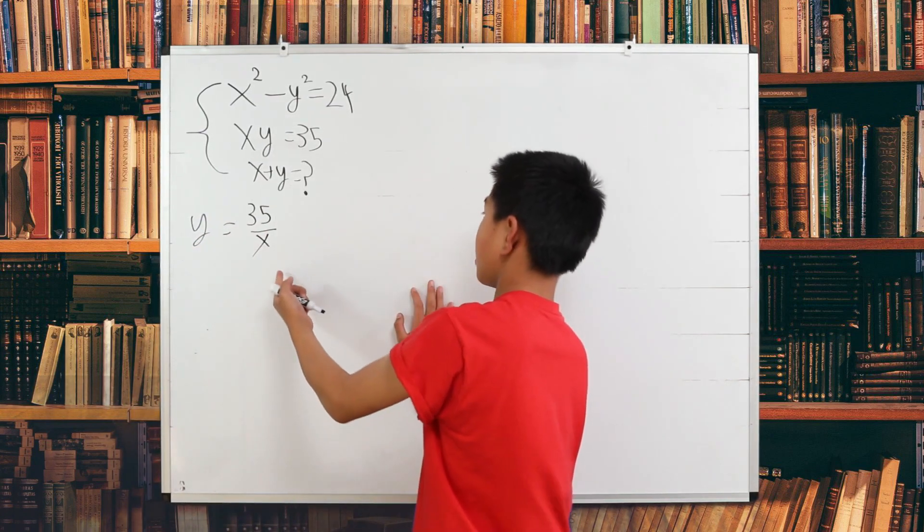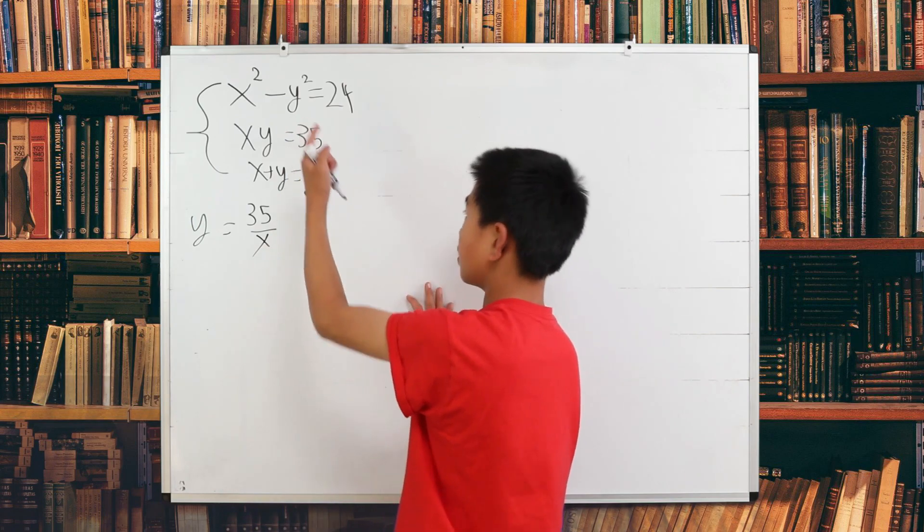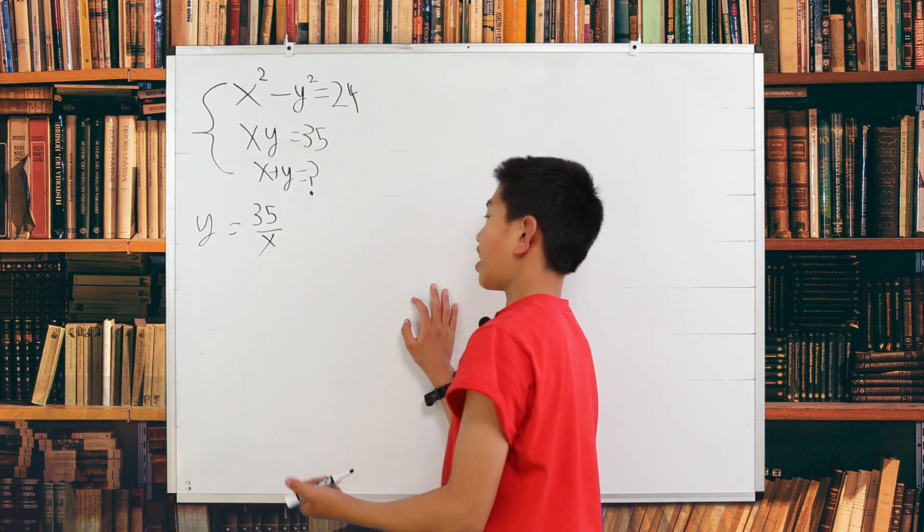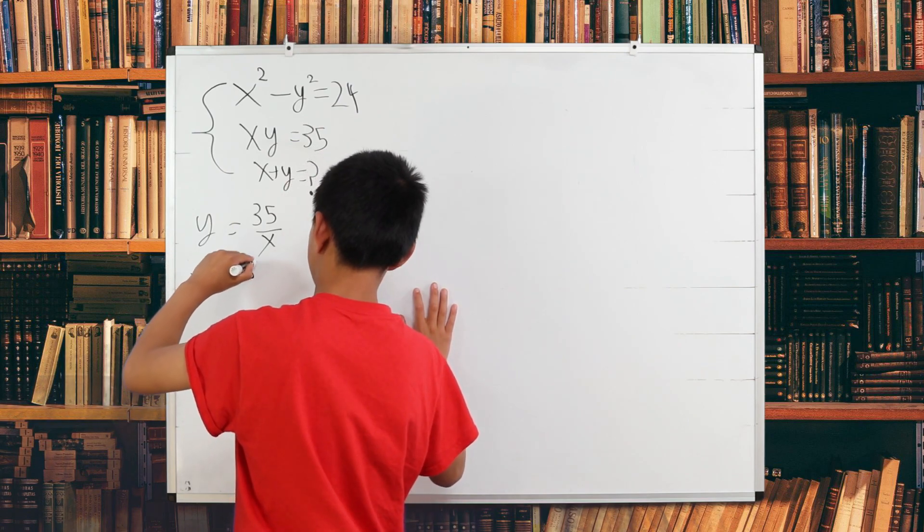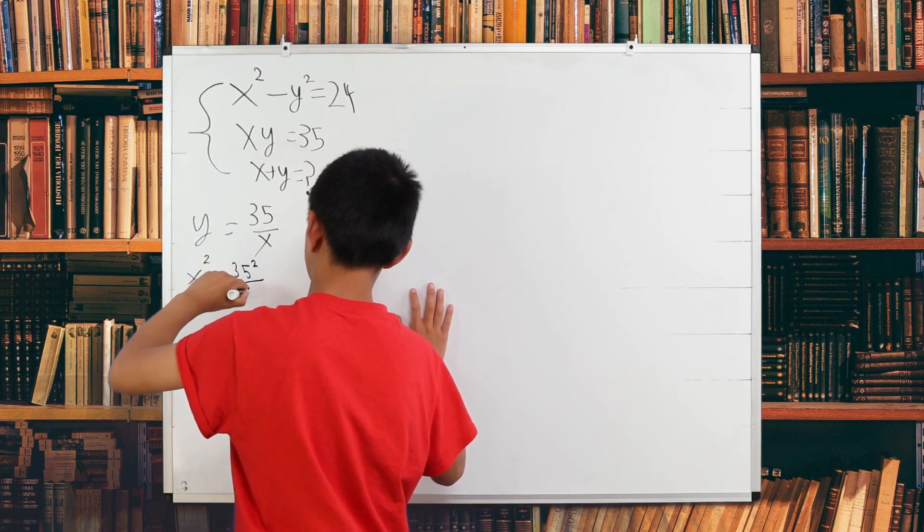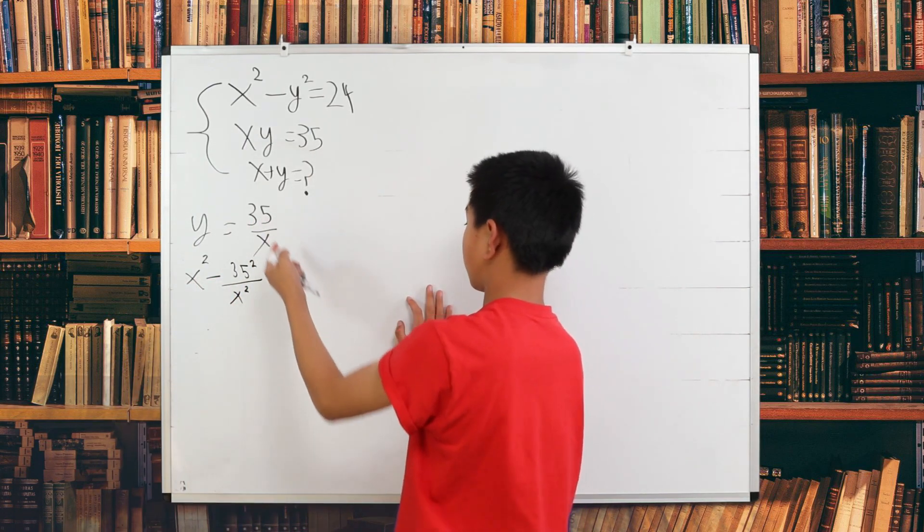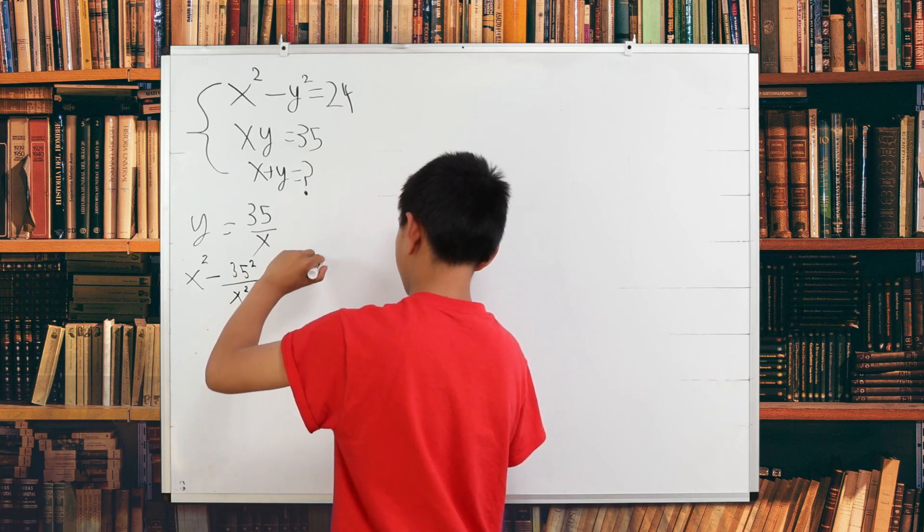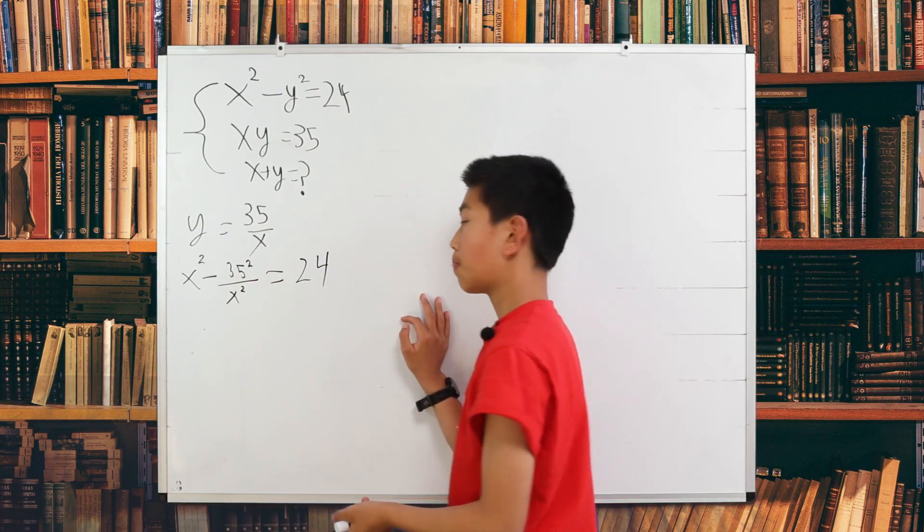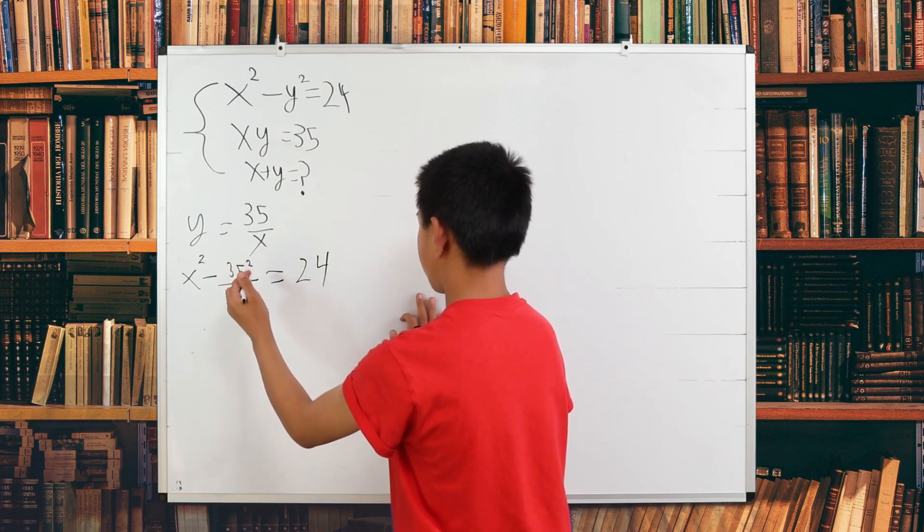So when you bring this value of y into the original equation, we get that x squared minus 35 squared over x squared. That's just this 35 over x squared. This is equal to 24 and we immediately see a problem. There is a fraction here being divided by x squared.